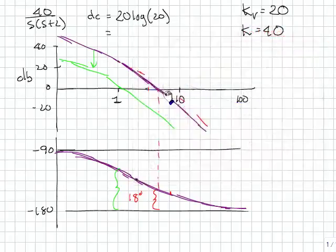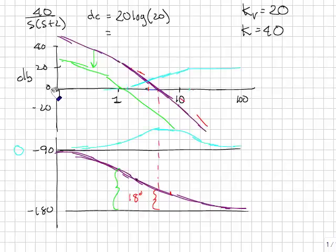What you do sacrifice is gain at higher frequencies. It actually adds some gain at a higher frequency. I'm going to roughly sketch in what a phase lead controller would look like. The light blue line is a possible phase lead controller.